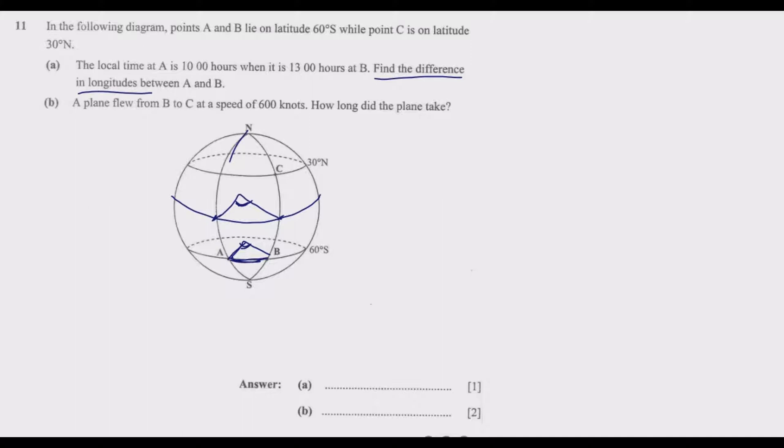We are going to find these angles using the time difference. We know that the earth takes 24 hours to rotate complete, which is 360°, in 24 hours.